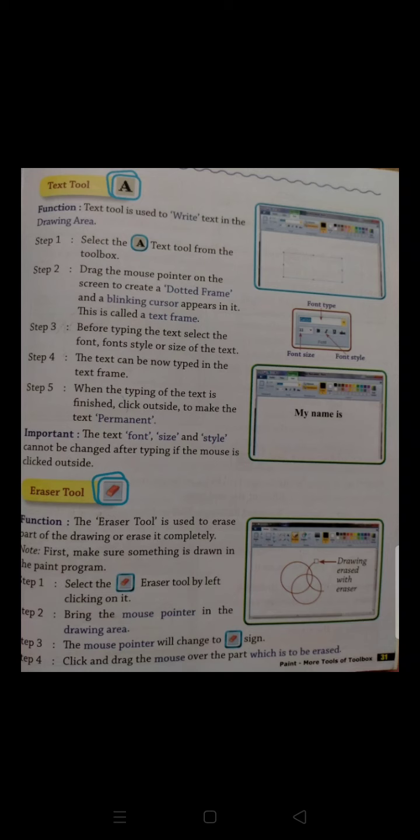And a blinking cursor will appear. We call this text frame. Step 3. Before typing the text, select the font, font style and size of the text. Before we type, we select our text.